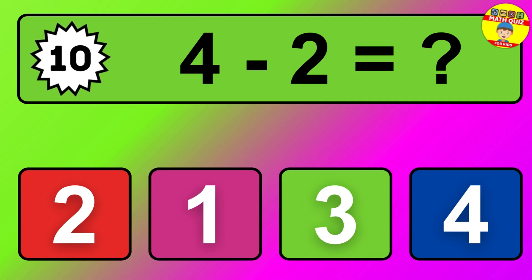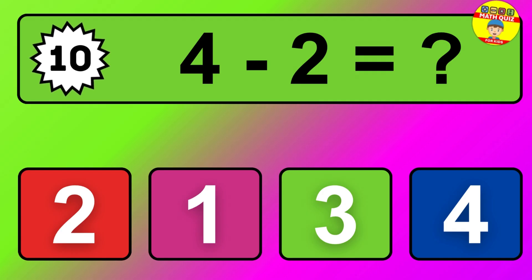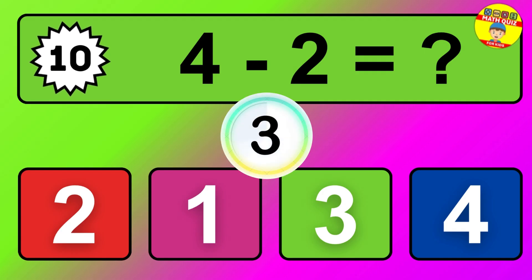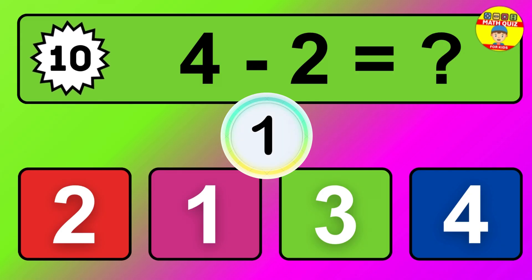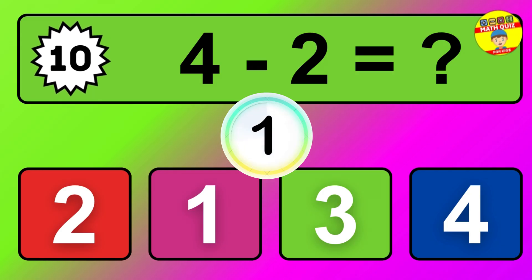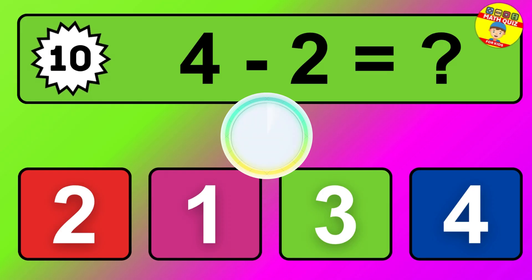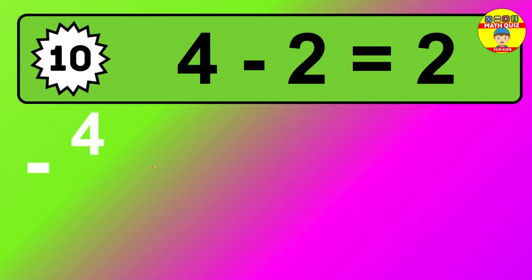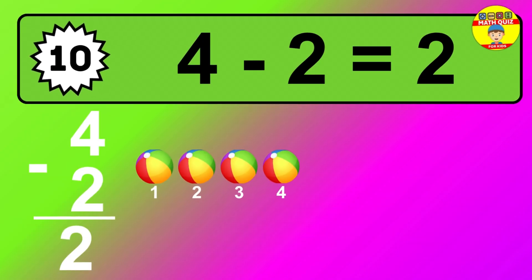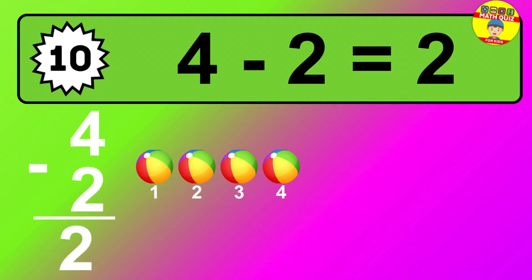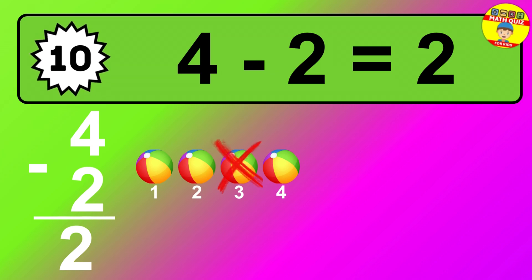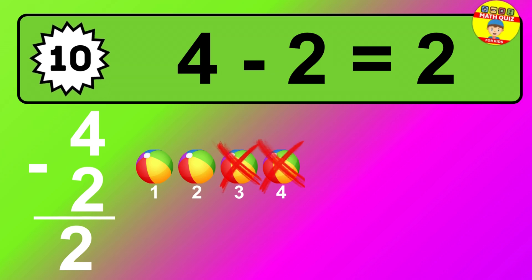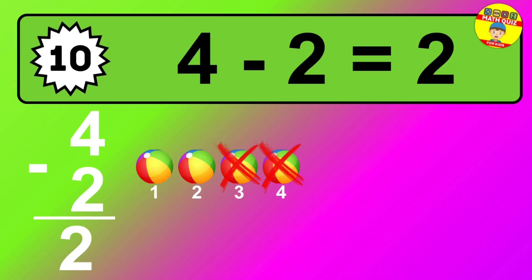Question 10. 4 minus 2 equals what? The answer is 4 minus 2 is 2. Let's count it: 1, 2.